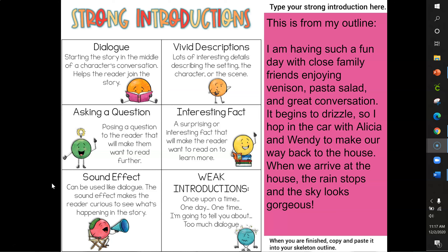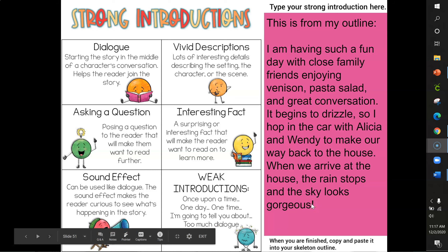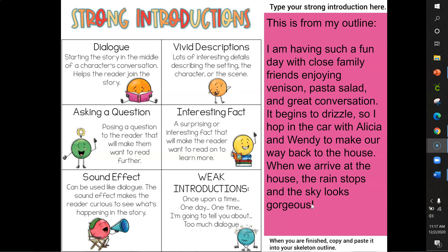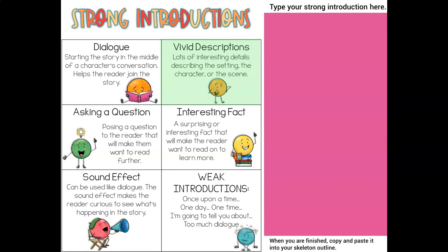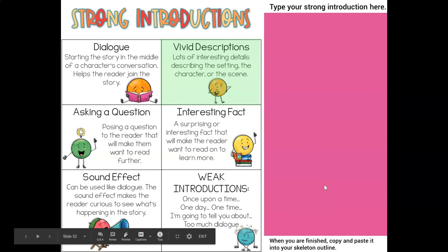Let's take a look at the introduction I had written on my outline — this is directly from my outline. 'I'm having such a fun day with close family and friends, enjoying venison, pasta salad, and great conversation. It begins to drizzle, so I hop in the car with Alicia and Wendy to make our way back to the house. When we arrive, the rain stops and the sky looks gorgeous.' This is a nice outline of an intro, but it's just not as strong or as catchy as I would like. I think I can write a better introduction with some vivid descriptions — lots of interesting details describing the setting, character, or scene. So let's take a look at my new and improved introduction.